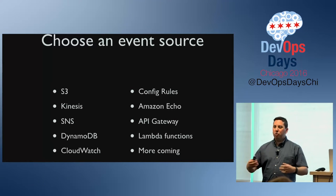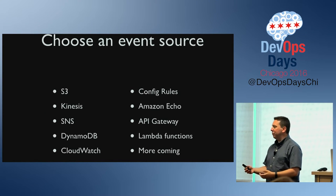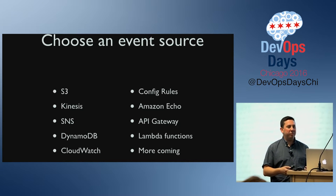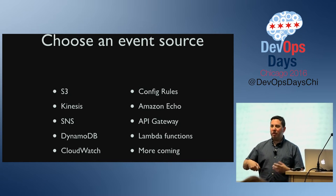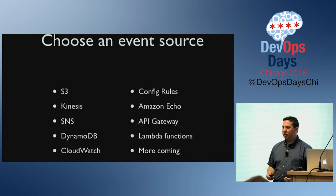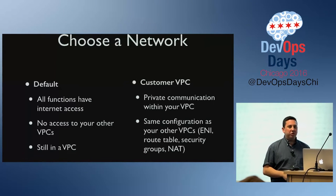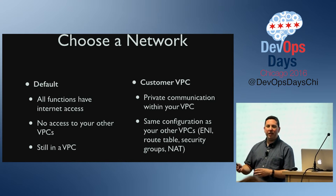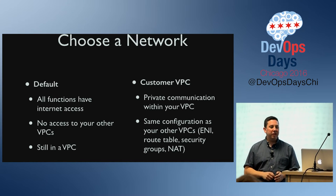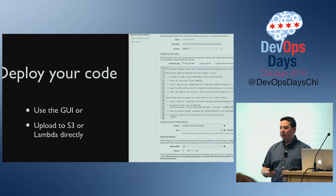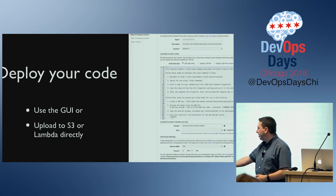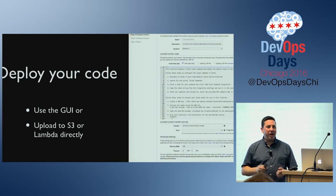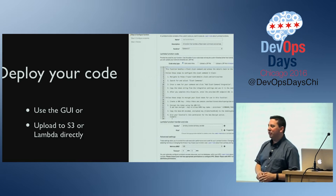Then you have to choose the source that triggers that function — functions don't just run, you have to trigger them. You can trigger them with CloudWatch triggers that work like cron, or a bunch of other things. You have to choose the network they'll run under, whether it's a private network or the regular network and how that ties into the rest of your systems. And then finally, you have to use Amazon's interface to deploy.